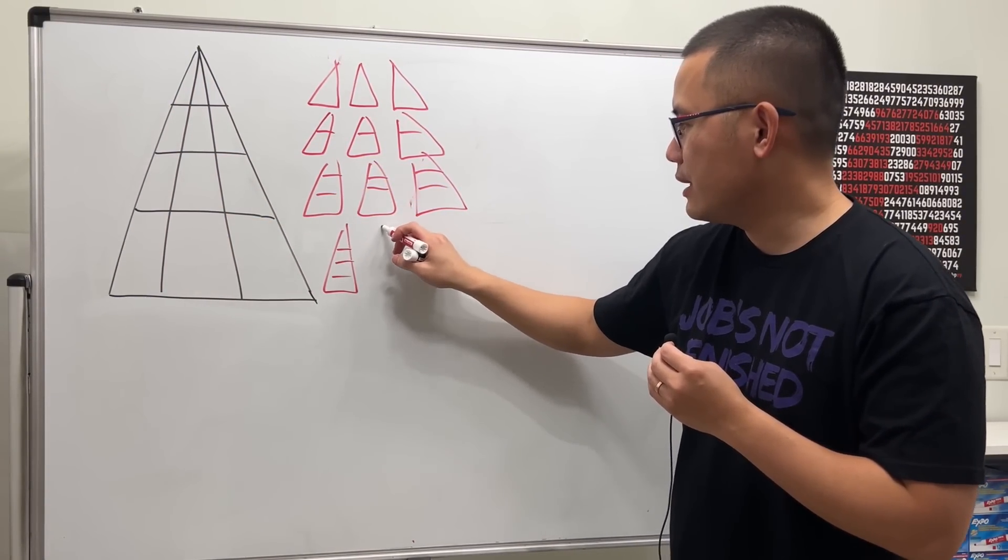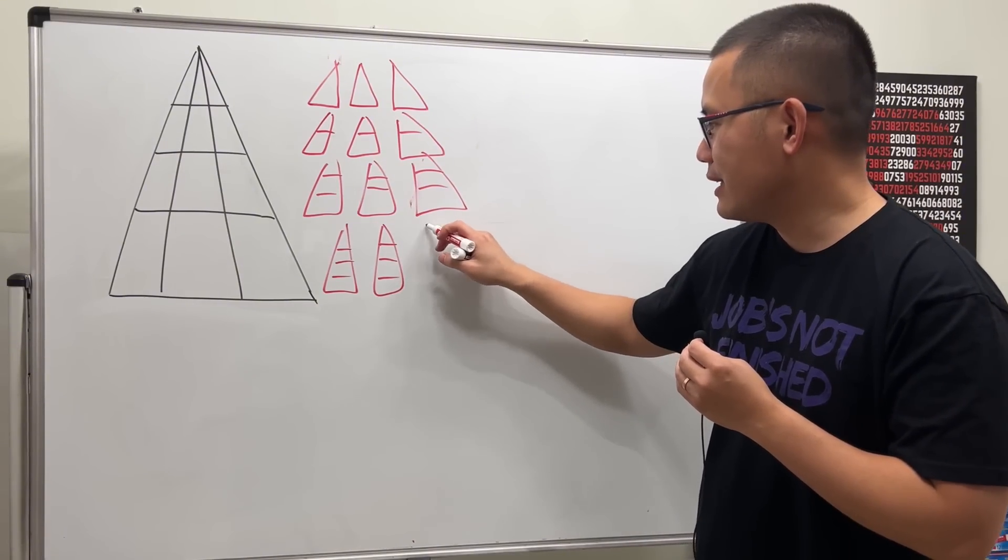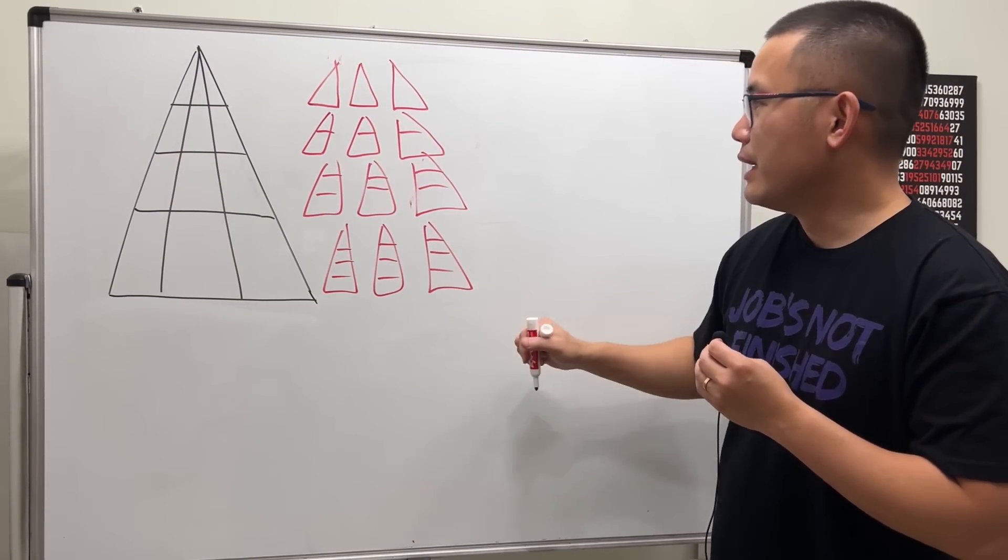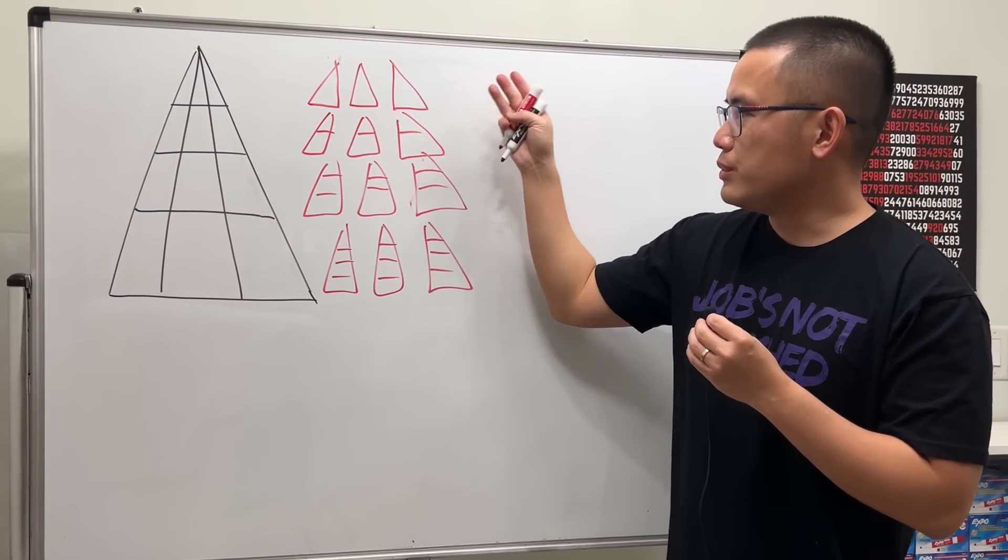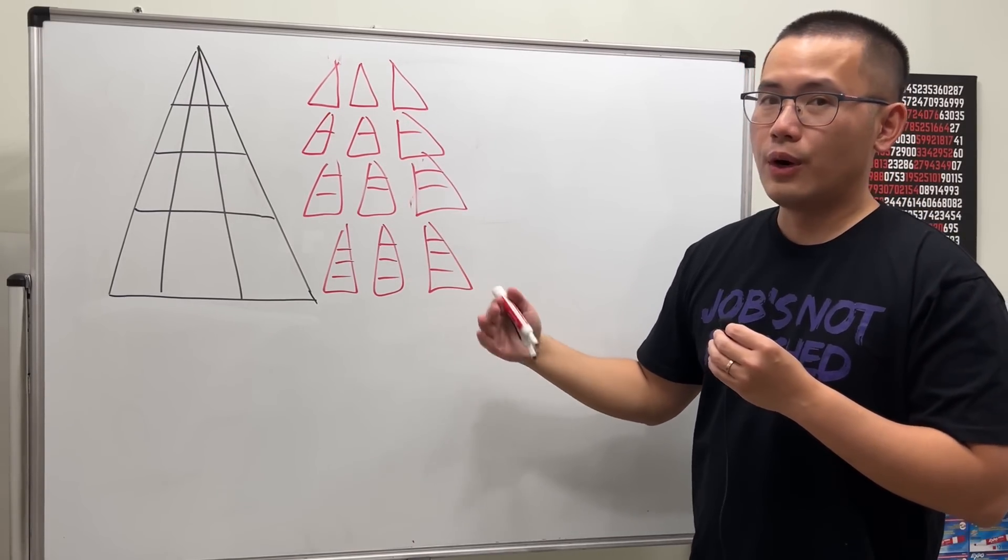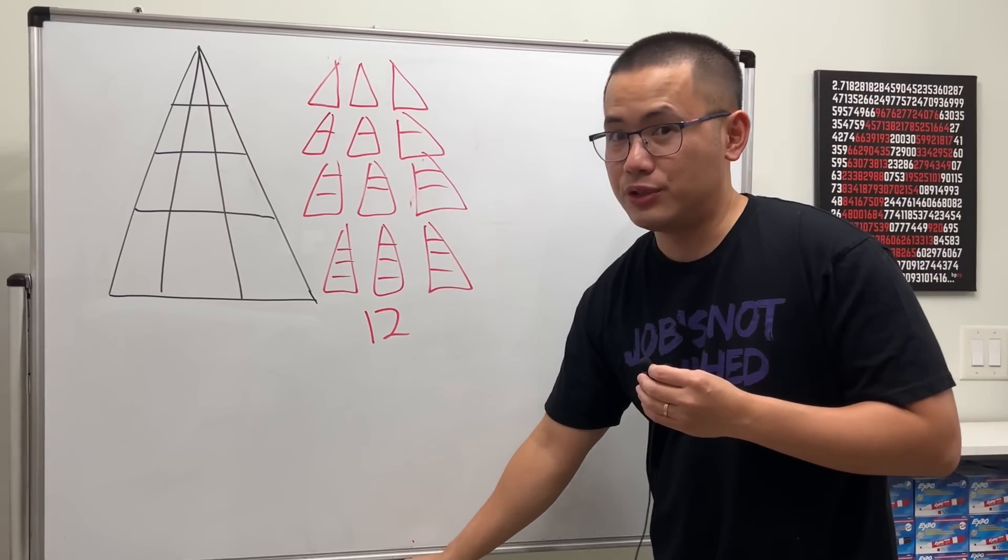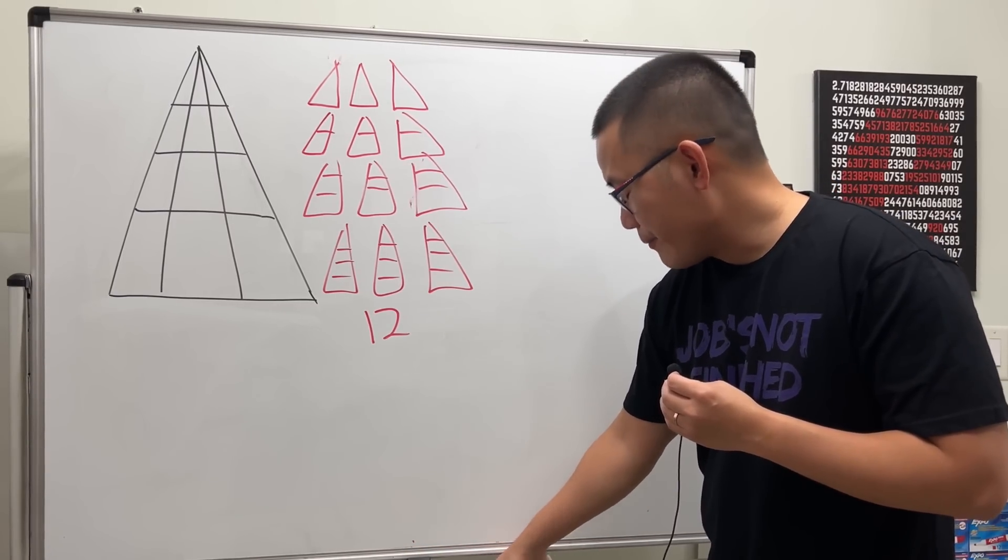And then lastly you can go from one all the way to the last one, so you have this: one, two, three, and then one, two, three, and then one, two, three. So right here we have one, two, three, and then one, two, three, four. All together here we have 12 such triangles.